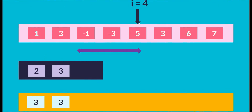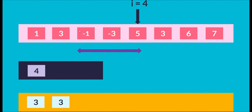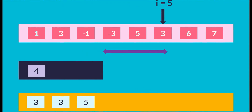We pop index 1 out. Now we check if 5 is greater than elements at the back. Index 3 (value -3): yes, so we pop -3. Next, index 2 (value -1): still smaller than 5, so we pop -1 as well. The DQ is empty, so we push index 4 onto the DQ. We've seen all elements in this window and the maximum at the front is index 4, element 5, so we push 5 onto the output array.